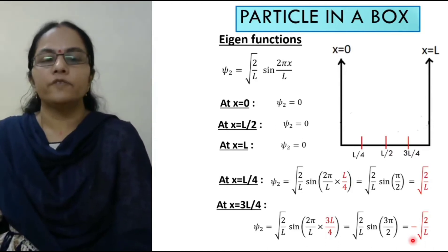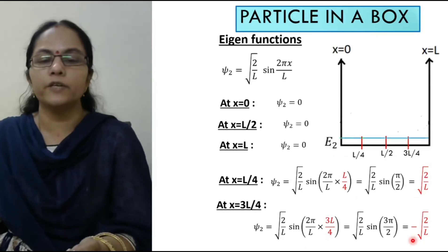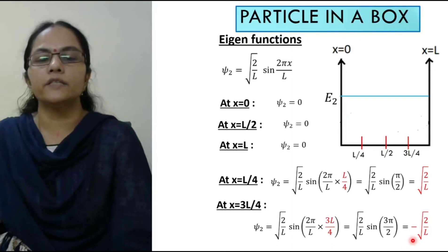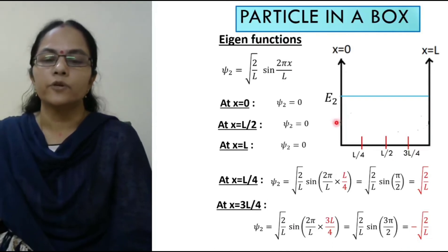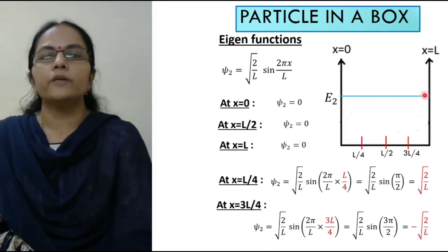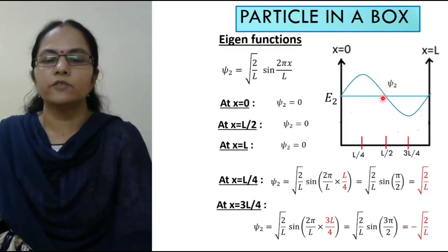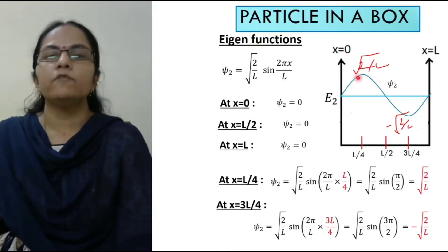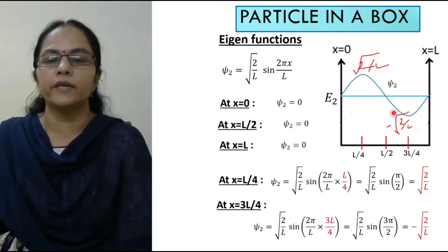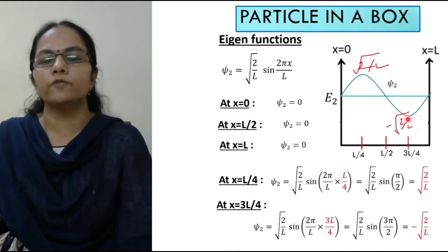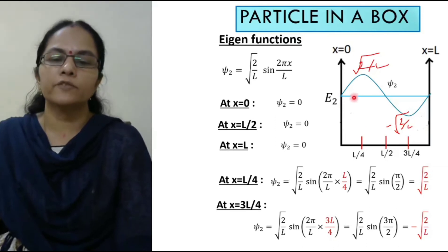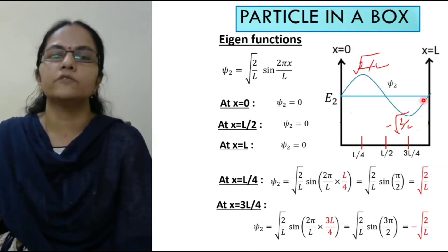Now we draw the wave function for n equals 2. The energy at this state is E2. The wave function ψ2 is zero at x equals 0, rises to positive square root of 2 by L at x equals L/4, returns to zero at x equals L/2, drops to minus square root of 2 by L at x equals 3L/4, and returns to zero at x equals L.